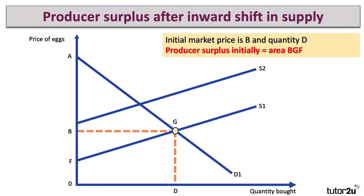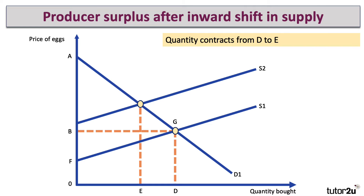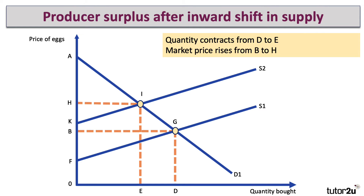Let's assume there's a big rise in costs. Many egg producers are affected by an increase in the cost of feed and also energy — a major cost to those large-scale growers. So supply shifts from S1 to S2 due to higher costs. That will cause a fall in the quantity bought and sold from D to E, and the price will go up from B to H in equilibrium. Of course, the extent to which the price goes up depends on the price elasticity of demand.